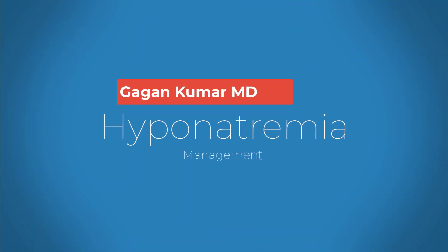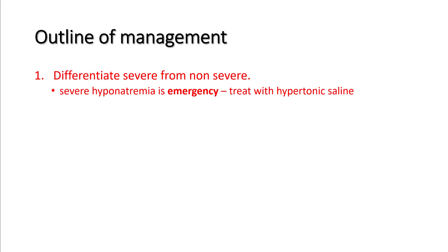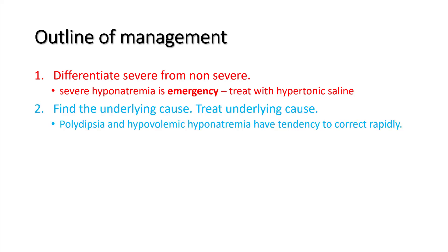Hello everyone. Today we'll be talking about how to manage hyponatremia. We are nearing the end of our lecture series on hyponatremia. Let's get an outline first and then discuss each point. Step one is to differentiate severe from non-severe — understanding that severe hyponatremia is an emergency — and treat it with hypertonic saline. Step two is to find and treat the underlying cause.